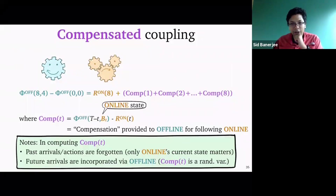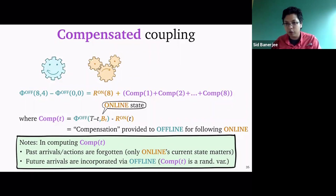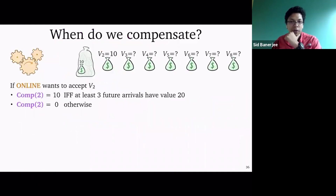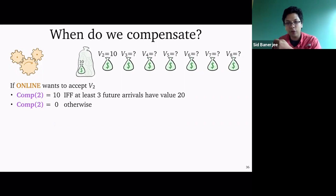Up to now this is just bookkeeping — I've taken this process, come up with a coupling where the states are coupled together, and defined compensation to couple the value functions together as well. What I really want to understand is when we compensate and how to calculate this compensation quantity. Let's look at the same example. The online algorithm is deciding whether or not to accept V2. If online wants to accept V2, we need to compensate if and only if at least three of the future arrivals have value 20 — the only way accepting a 10 is a mistake is if there were enough 20s in the future to fill up your knapsack.